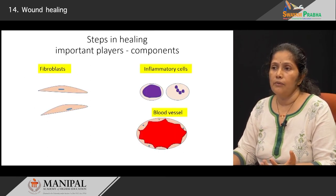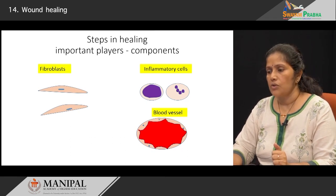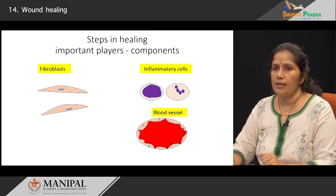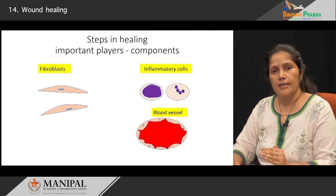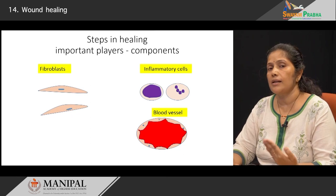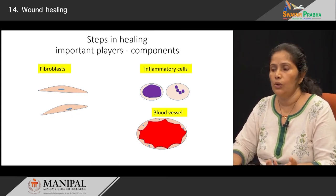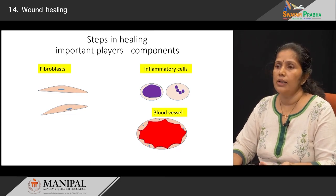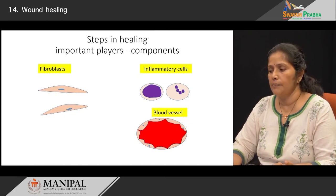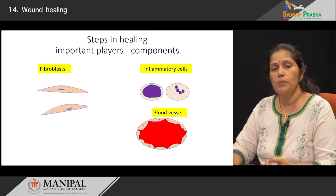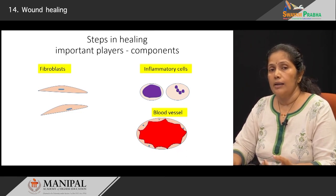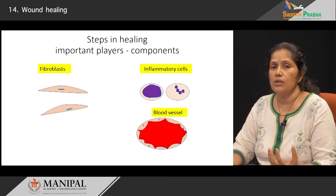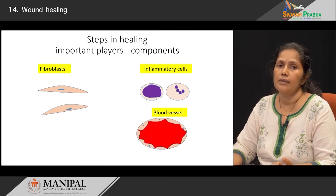There are three very important players in repair. First are fibroblasts, which lay down collagen. Second are inflammatory cells — neutrophils, followed by lymphocytes and macrophages, with some plasma cells also possible. The neutrophil is the first cell to arrive at the injury site, followed by macrophages and lymphocytes. Third are blood vessels — new blood vessels sprout in areas of injury and provide nutrition to the newly forming tissues. These three structures are what we will be talking about again and again in tissue repair.